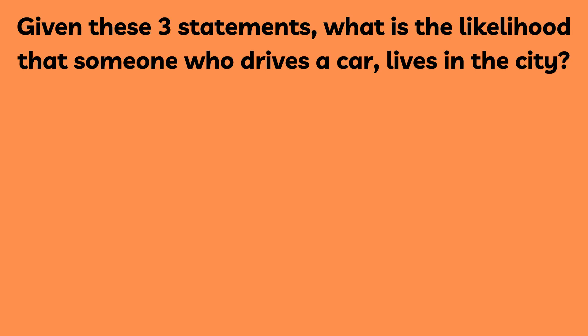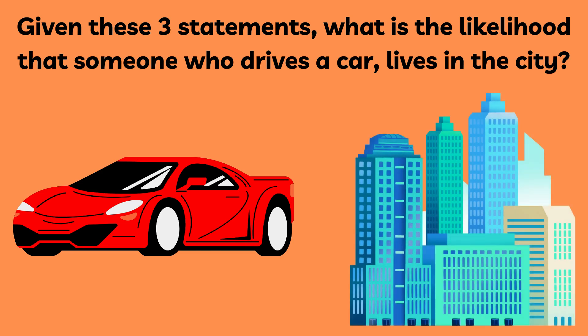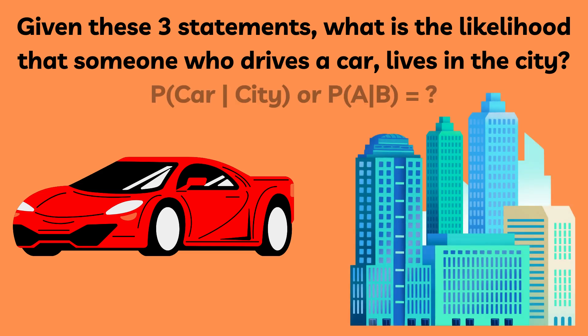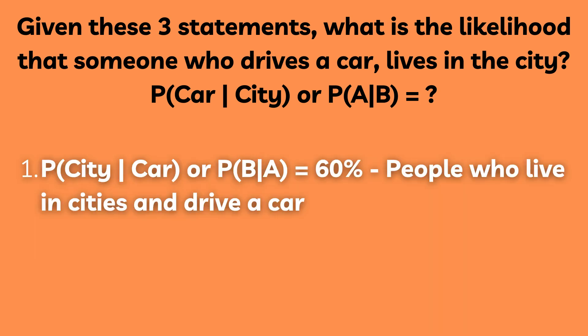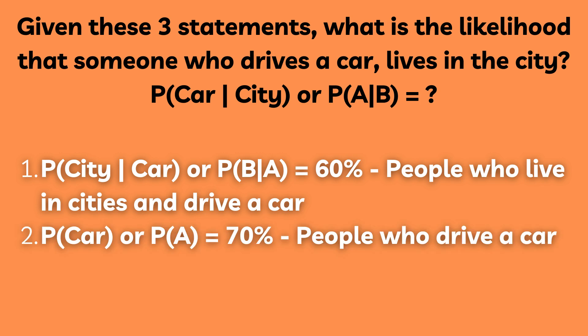Let's use a hypothetical example to illustrate this better. Given the following three statements, what is the likelihood that someone who drives a car lives in the city? We'll call this probability of car given city, or P(A|B). 60 percent of people who live in cities drive a car — let's call this probability of city given car, or P(B|A).